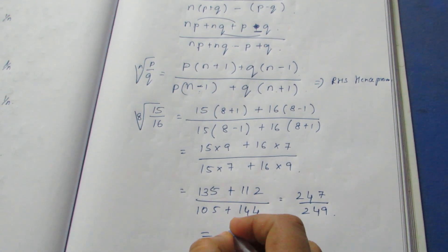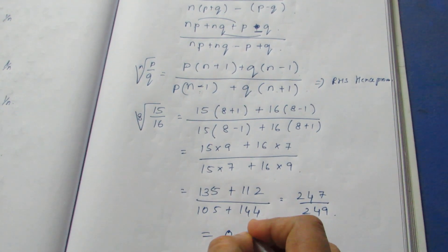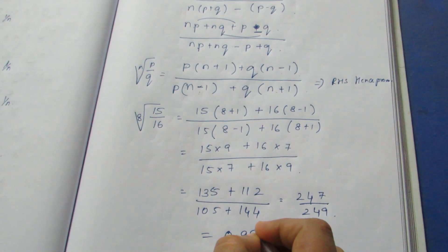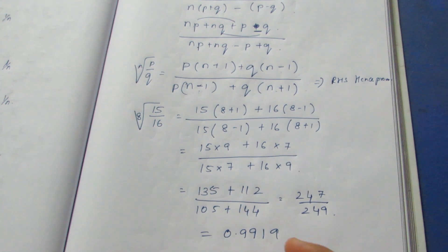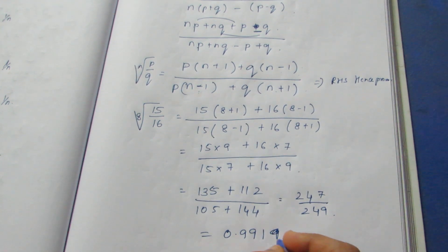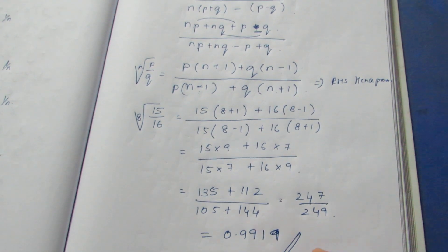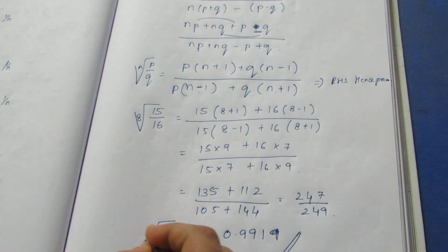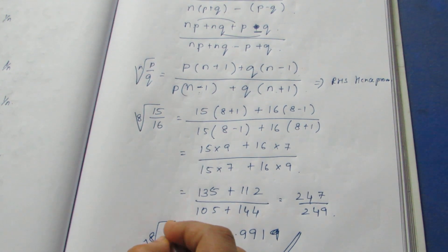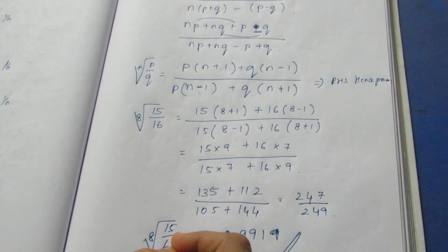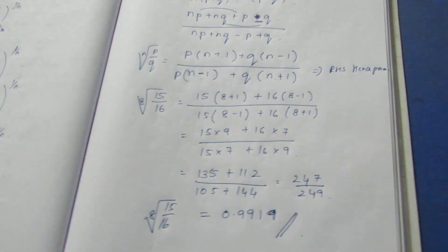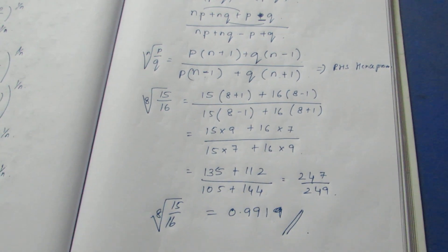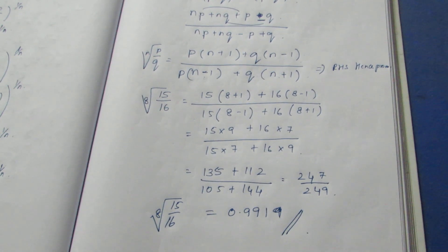Dividing, we get approximately 0.9919. So the final answer for the 8th root of 15 by 16 is approximately 0.9919. That is the sum. Thank you. Bye.